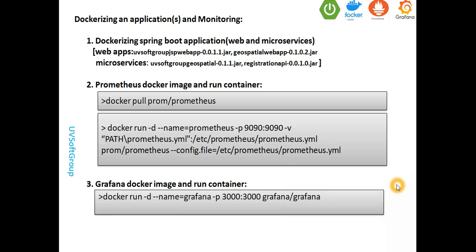It doesn't matter if it's in the middle layer, backend, or frontend — you can monitor all the hardware levels. Here's a short overview: you can pull the Prometheus Docker container from Docker Hub and run it. You simply run the Docker container with the default port 9090, then pass your Prometheus YAML config file — the prometheus.yml — which defines where your microservices and application are deployed, which ports and IP addresses.